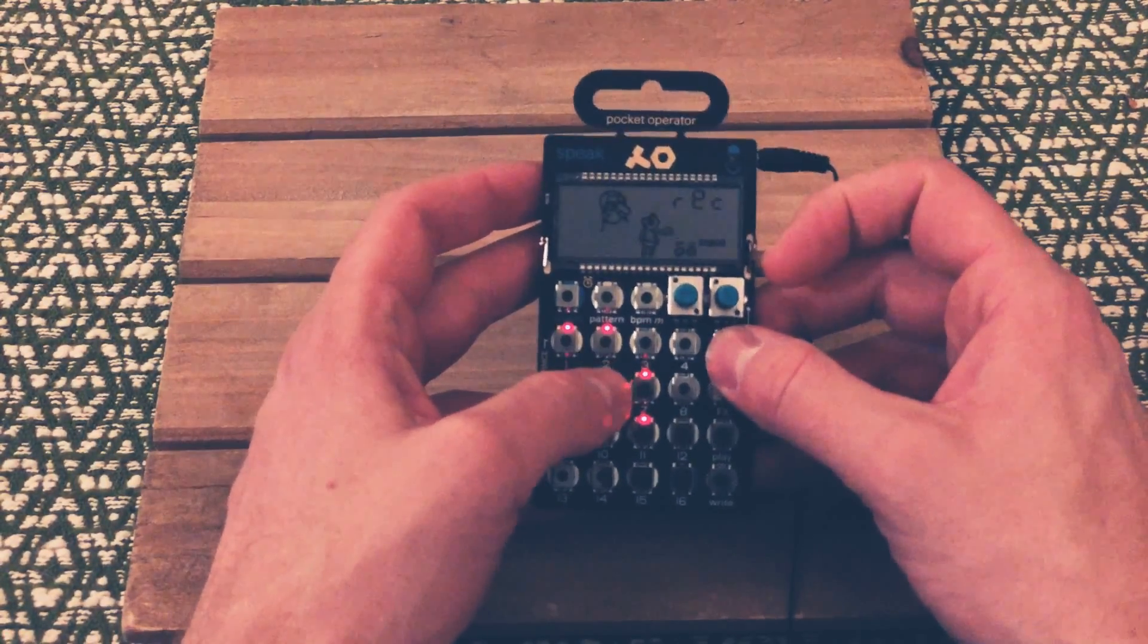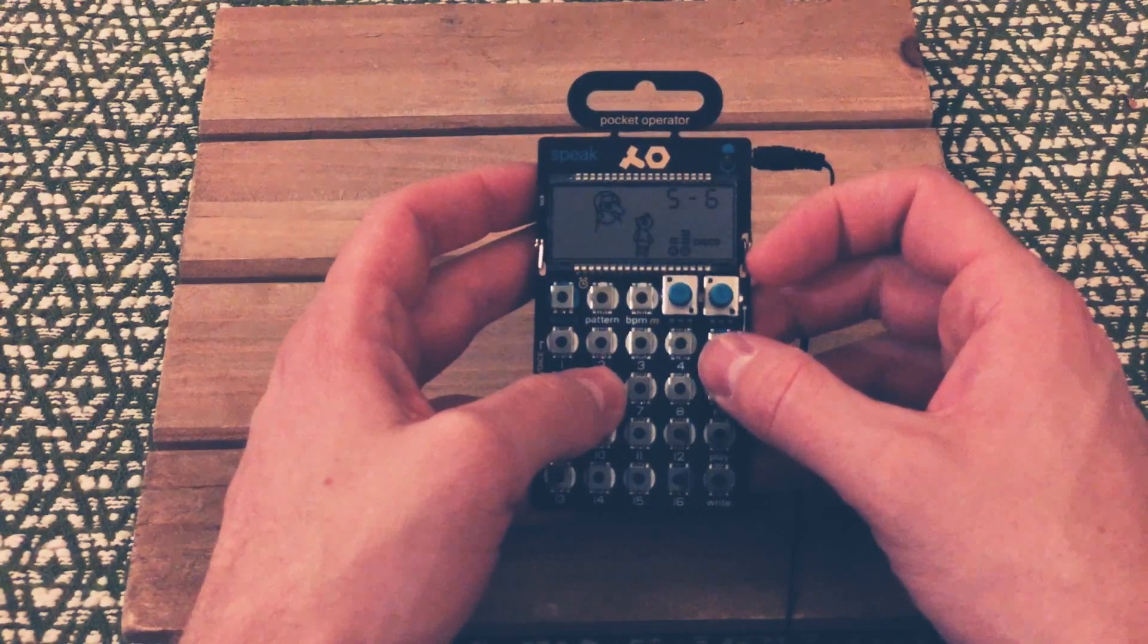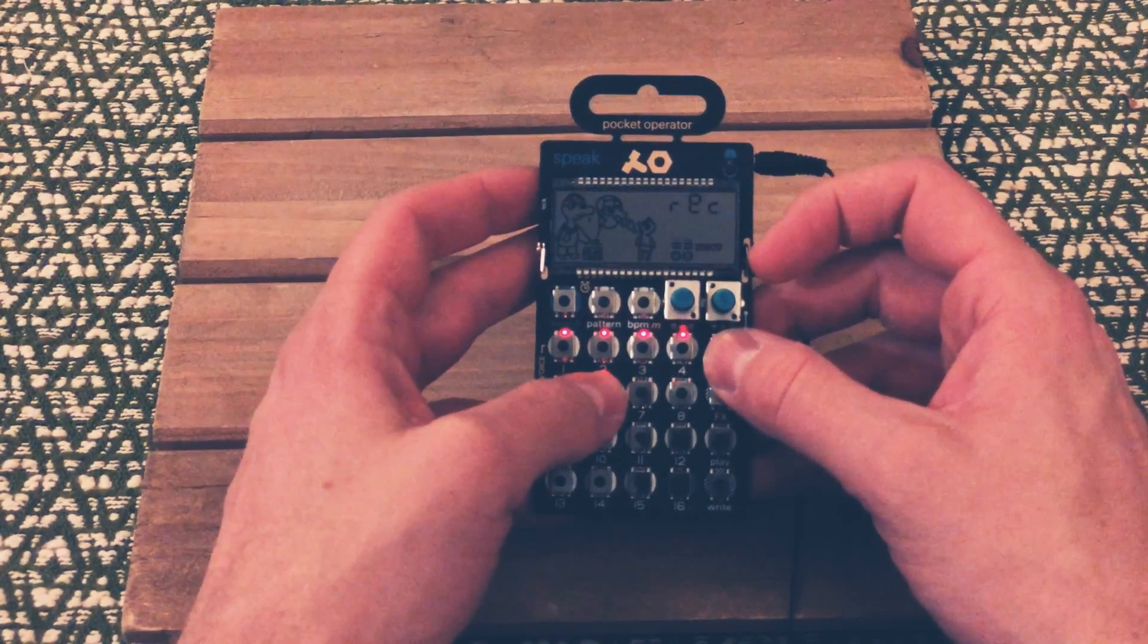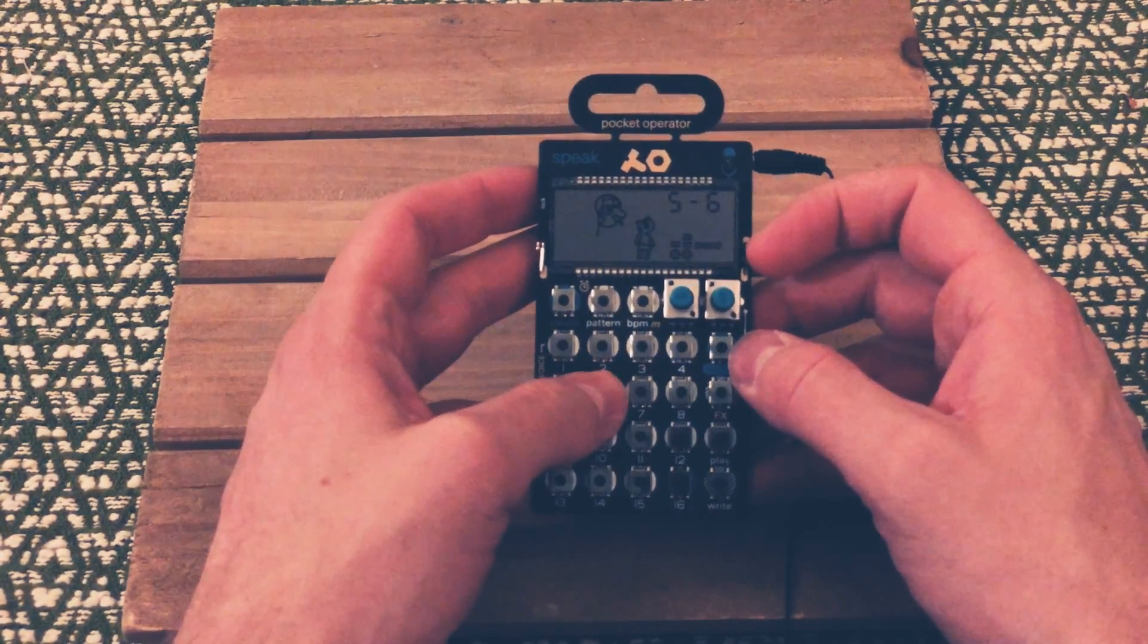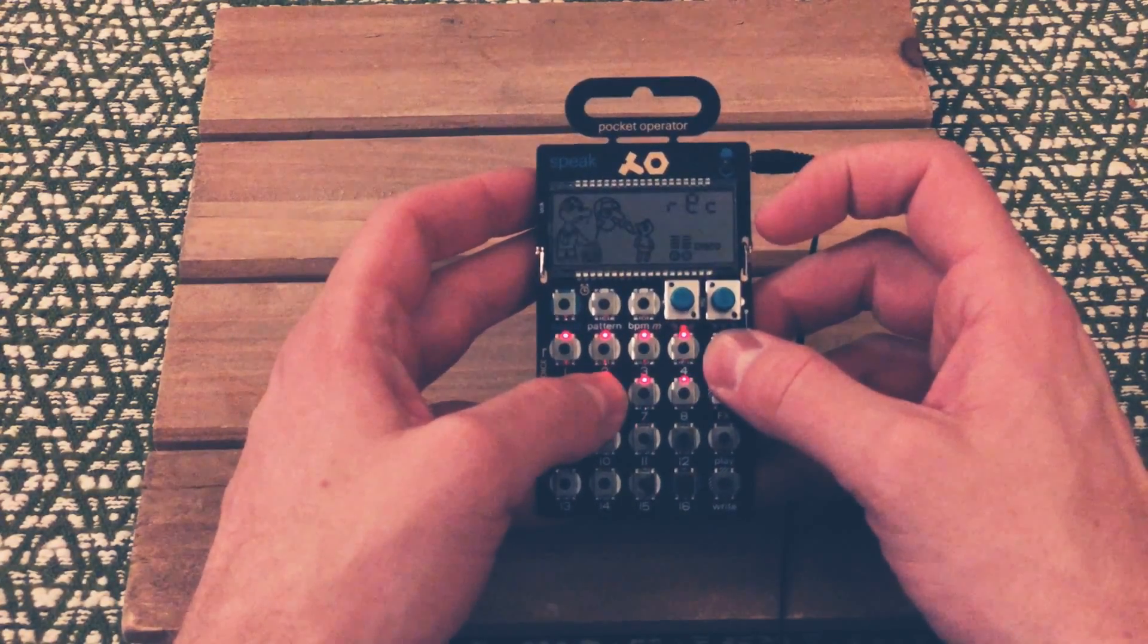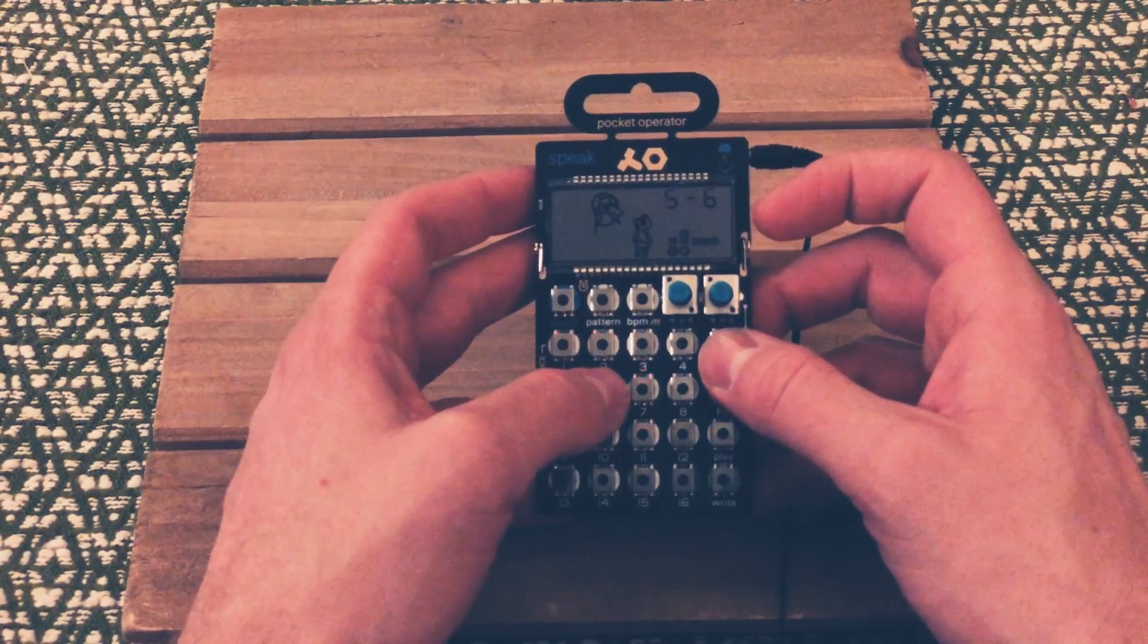If I do the 20 [demonstrates with 'secret features']. Let's try 60 [demonstrates]. It's better.